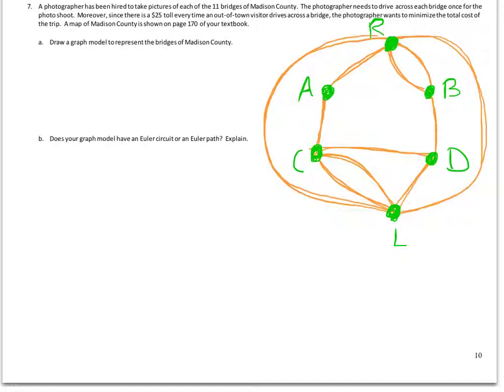Now does this graph model have an Euler circuit or an Euler path? Well, this depends on how many vertices we have that are odd. So I'm going to look at each vertex and count how many bridges come into it.